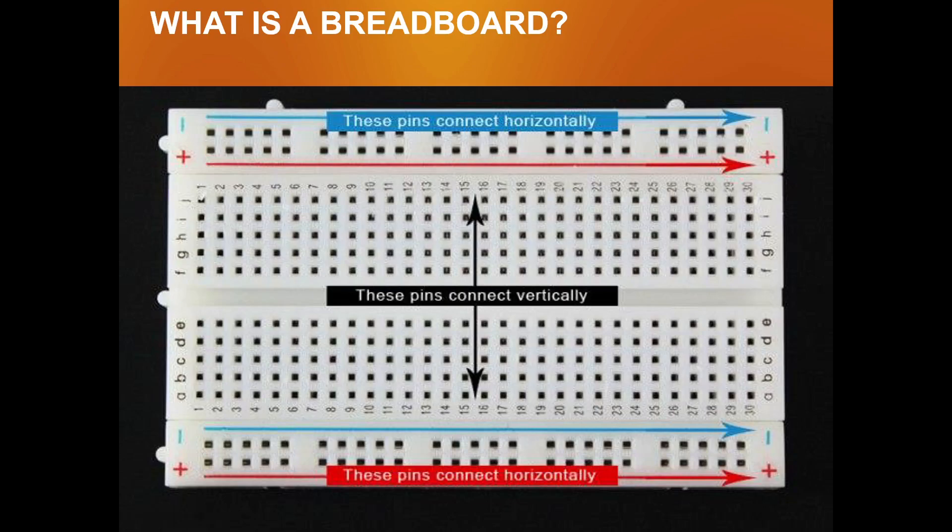At one pin the electrons go or the electricity flows, and from other pin it comes out. Here these pins are for vertical connections, so all the pins a, b, c, d, e.